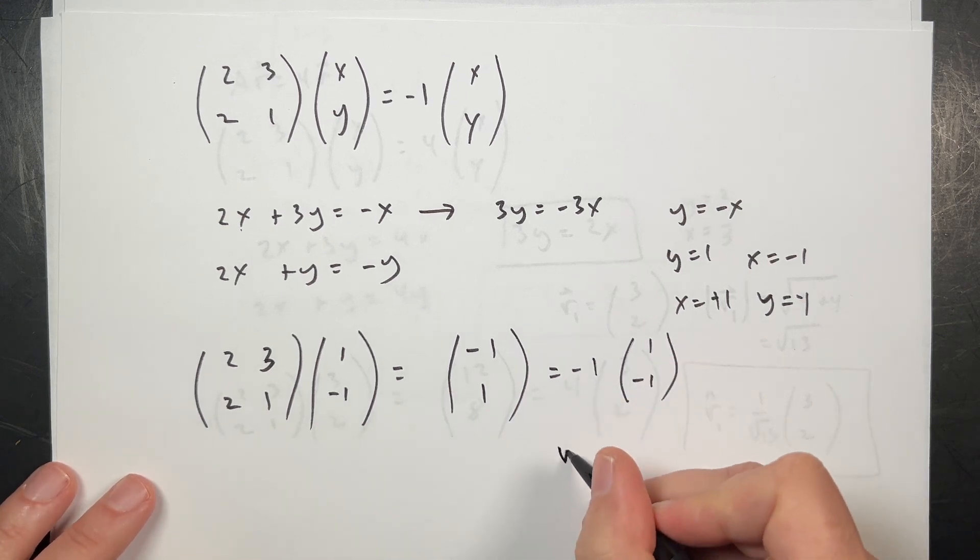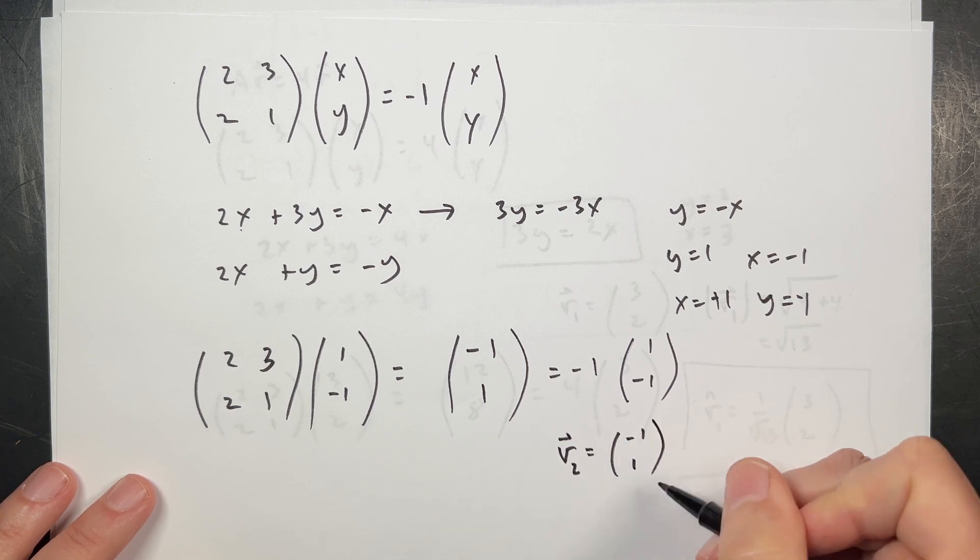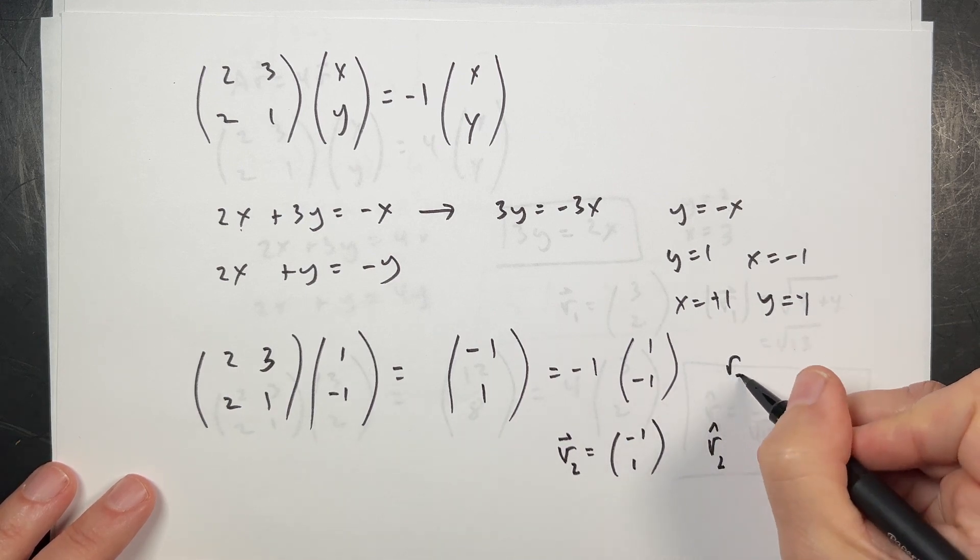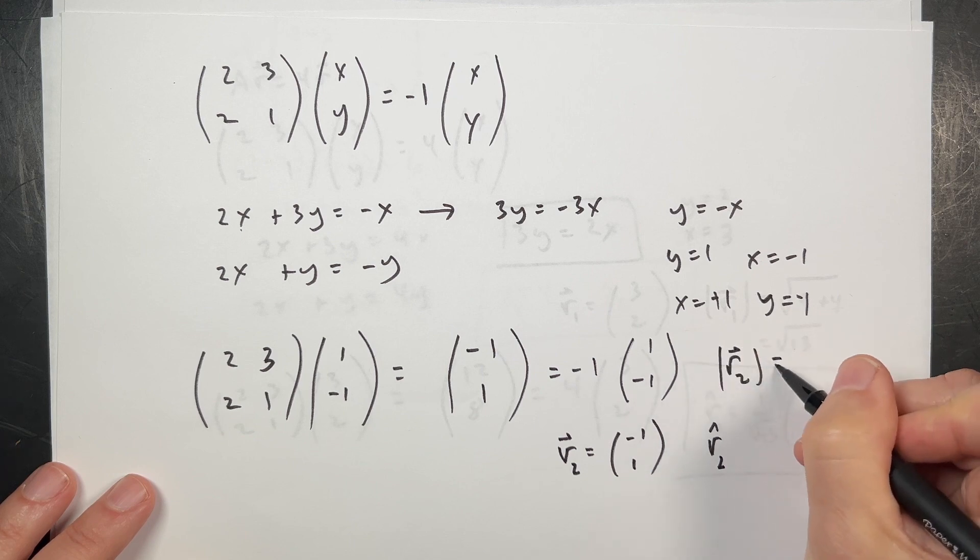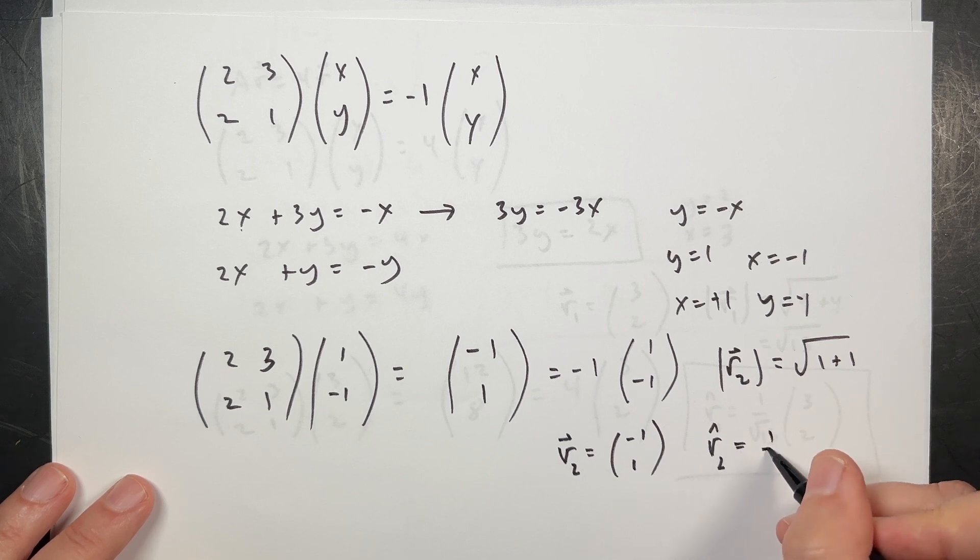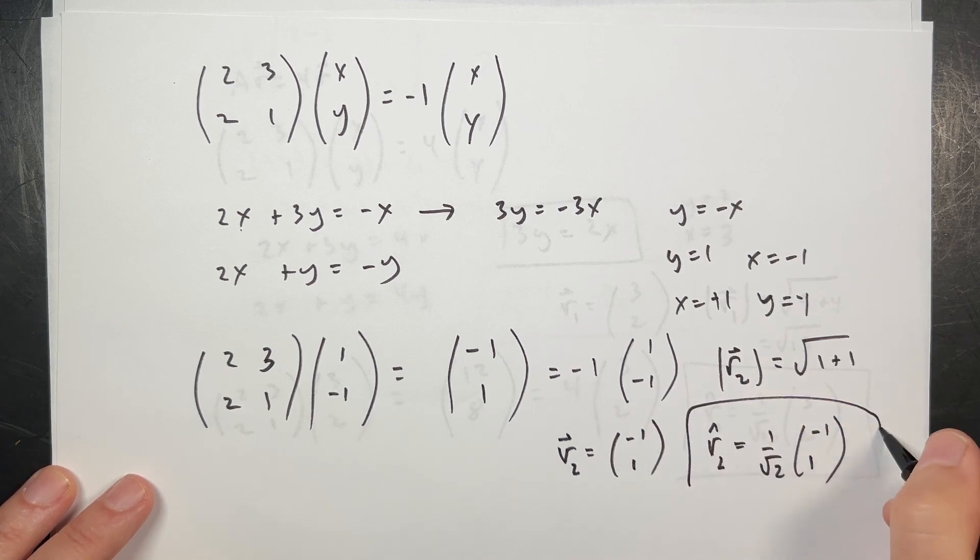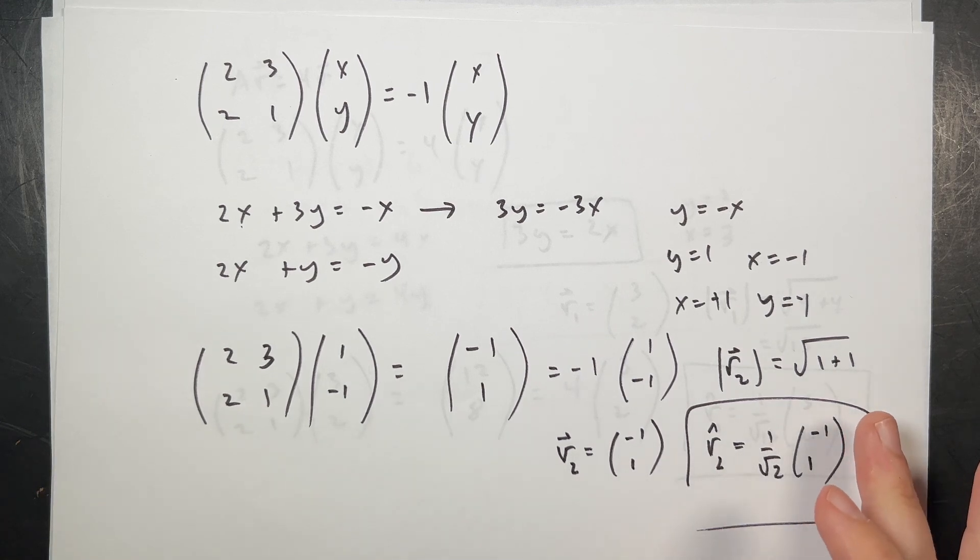So that one works. Now we need to normalize this too. So R₂ is equal to the vector (-1, 1). R₂ hat—let's find the magnitude of R₂. That's pretty easy. It's going to be the square root of 1 plus 1, which is the square root of 2. So this is 1 over the square root of 2 times (-1, 1). So we found our eigenvalues and our eigenvectors.